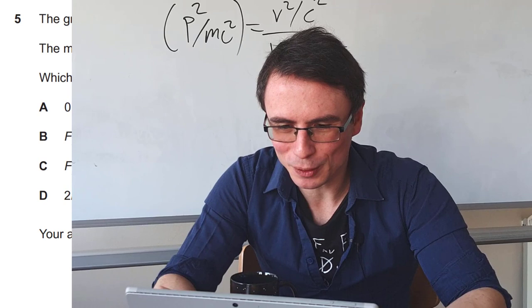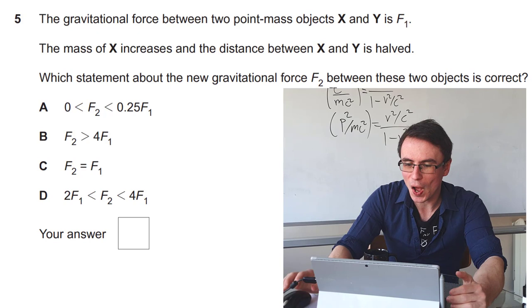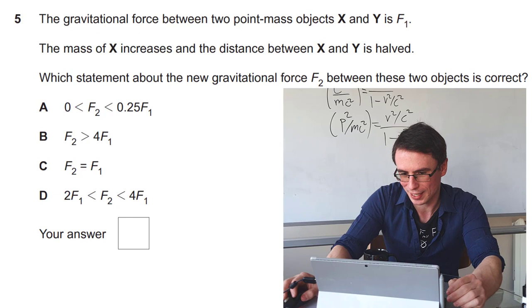Next one. This one is about gravitational forces and it's a fairly mathematical question. So we have the gravitational force between two point mass objects is F1. Then we halve the distance, meaning that the force will increase by a factor of 2 squared, which is 4. Which statement about the new gravitational force between the two objects is correct, assuming that we have also increased the mass of X?